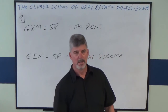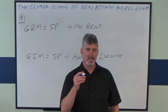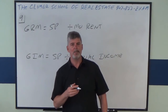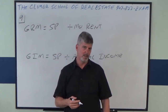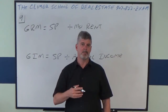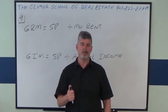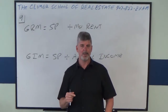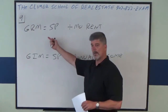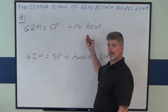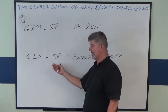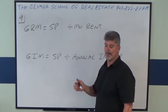First of all, GRM is monthly, GIM is annual. Think about it — don't we pay rent on a monthly basis? And if we're talking income, aren't we usually always talking about how much you make for a year, or annual? That's how you can remember it. Now, these are the formulas: GRM is sales price divided by monthly rent; GIM is sales price divided by annual income.